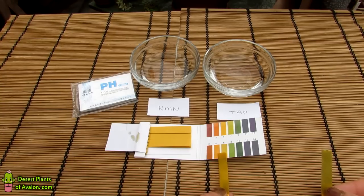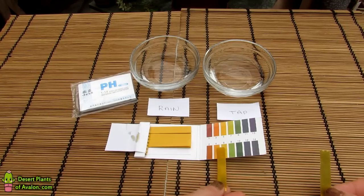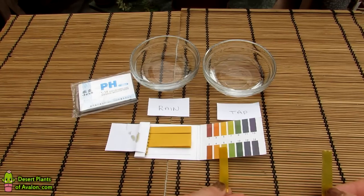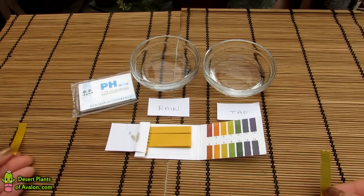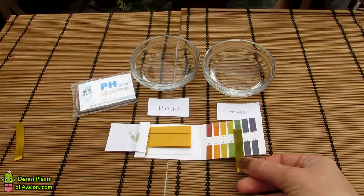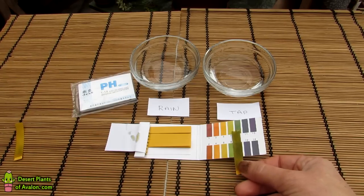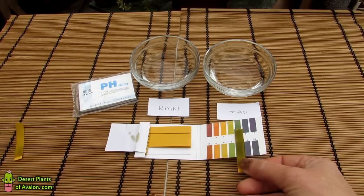This one is the rainwater, so as you can see, it matches pretty much between the five and the six. I'd say it's probably about 5.5, which is ideal for cacti—the rainwater is a good pH there. Then the tap water—that's the seven, which is the absolute maximum you really want, ideally 6.5. But as you can see, it's a lot darker than the seven.